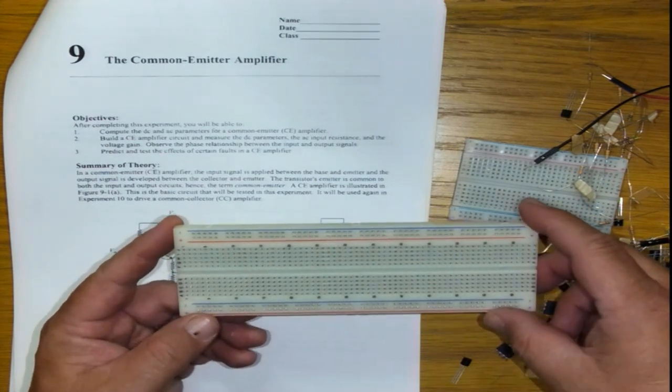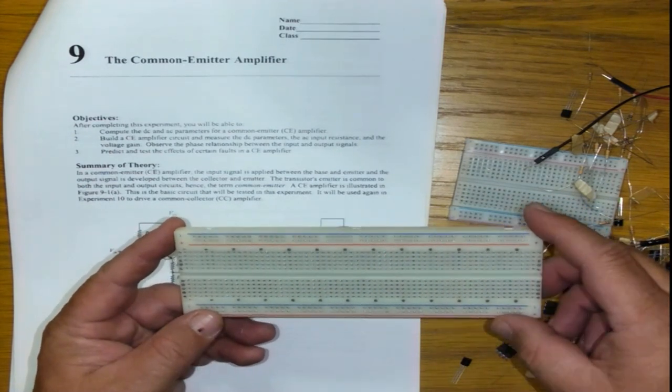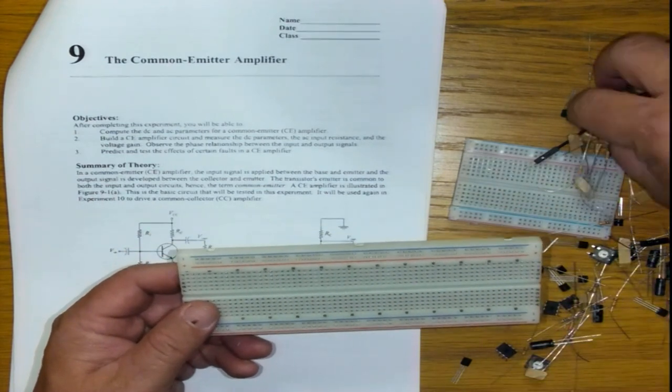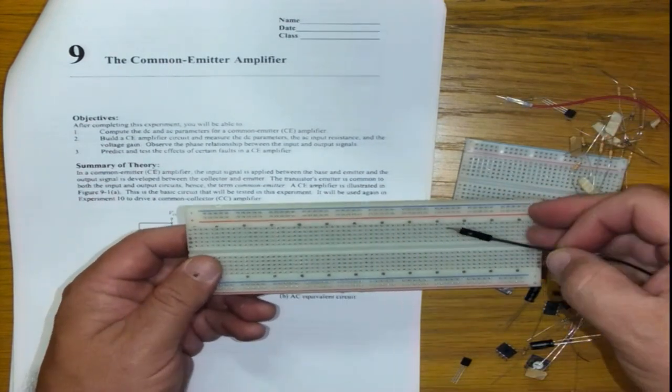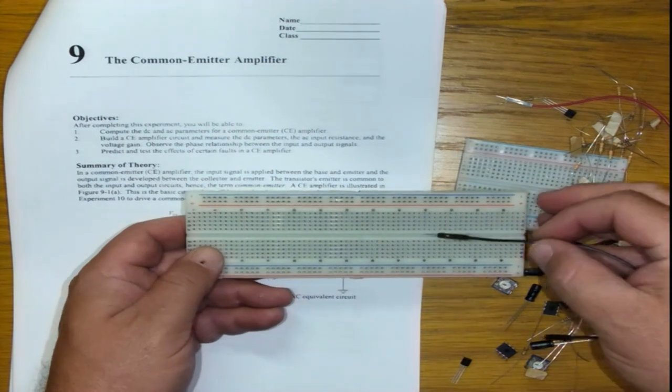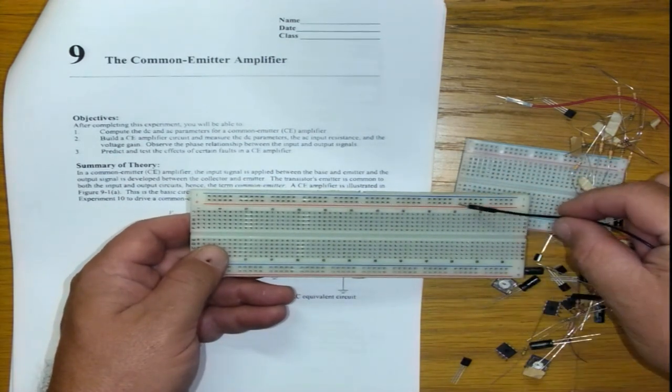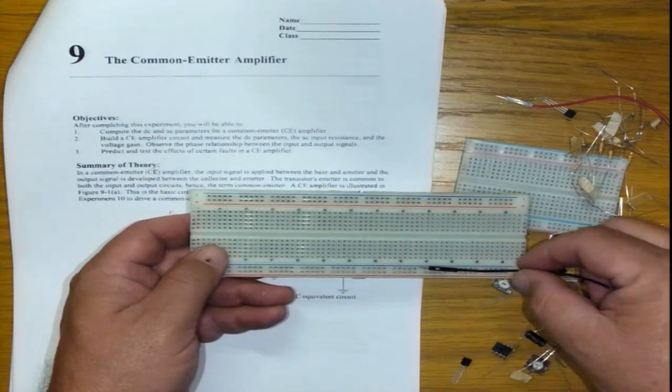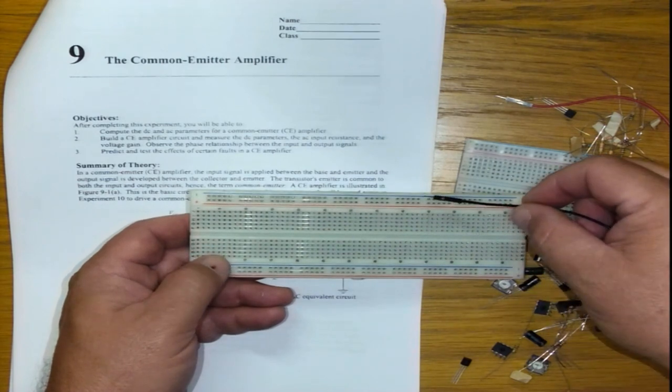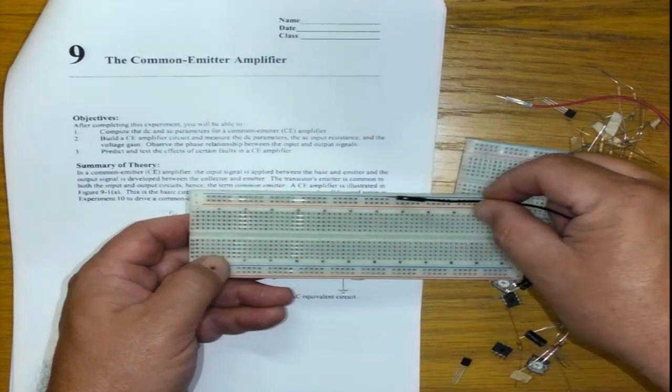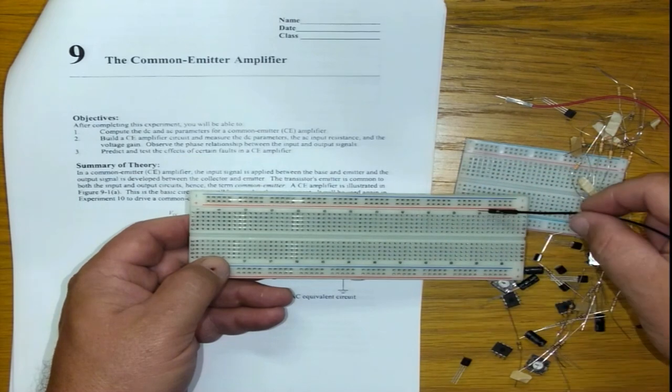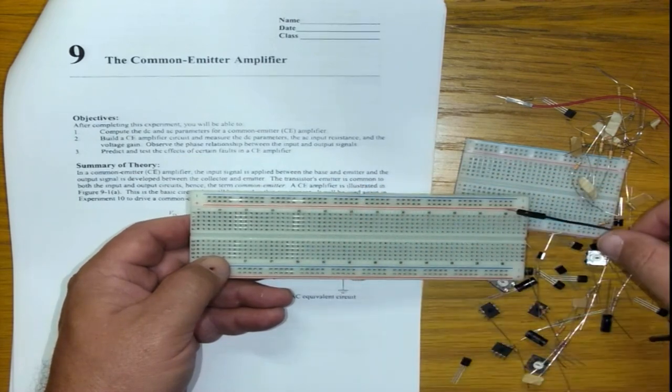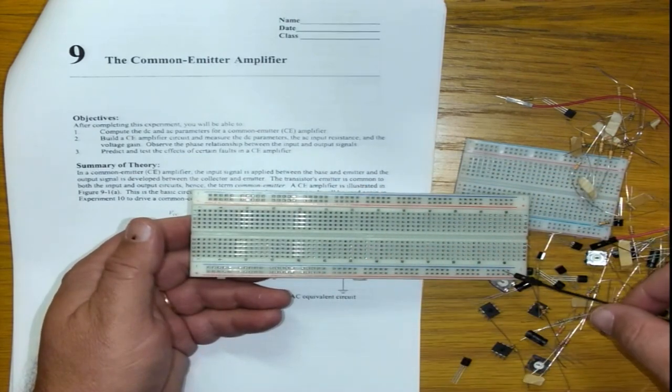In a previous video we have taken some time to identify the various aspects of a breadboard. Just to run through for those of you who haven't seen it yet, you have the red and the blue at the bottom, and these connections are running right through from left to right all the way from that side to this side, and the same here for the two rails at the bottom.